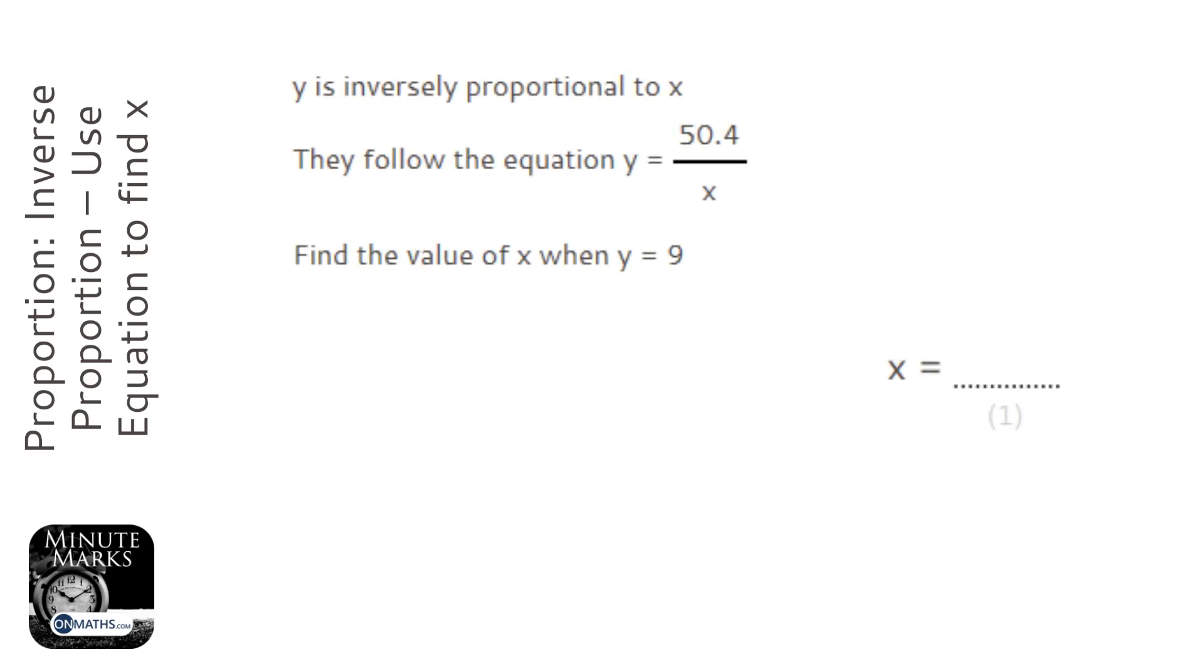Okay, so we're given an equation here and we're told to find out what x is when y is 9. So when I write out the equation y equals 50.4 over x, instead of y I'm going to write 9 equals 50.4.